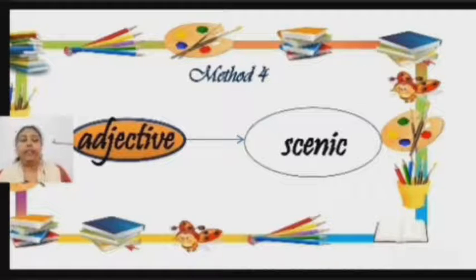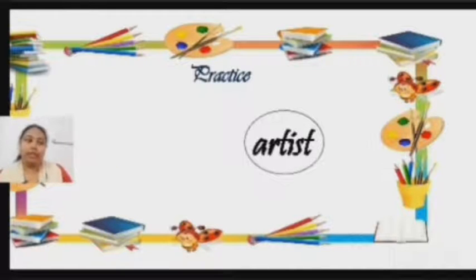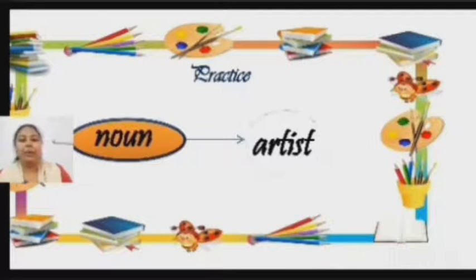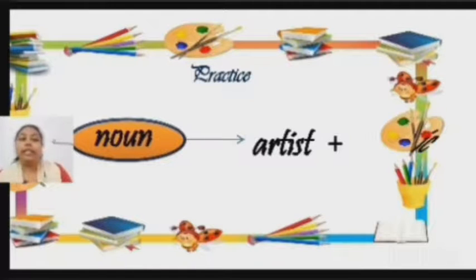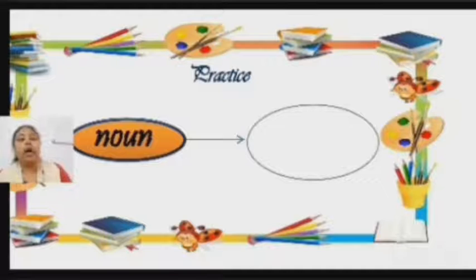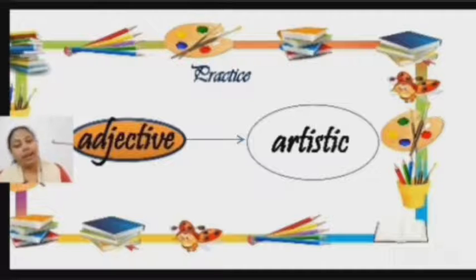Let us take one more example with such a suffix. The word is 'artist' — it is a noun. When I am going to add '-ic' to this, the word becomes 'artistic', and this is an adjective.